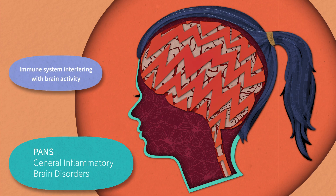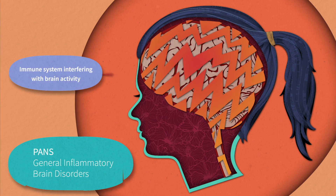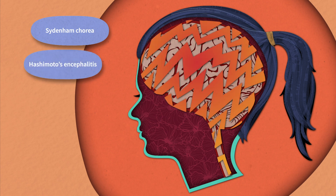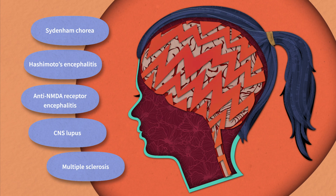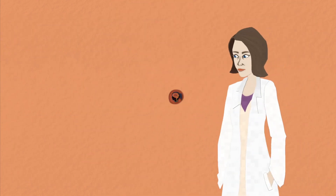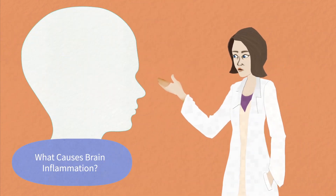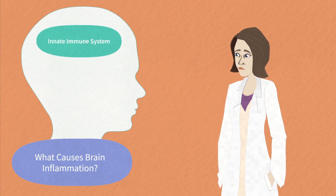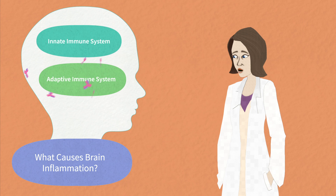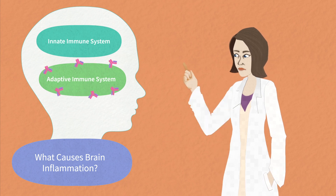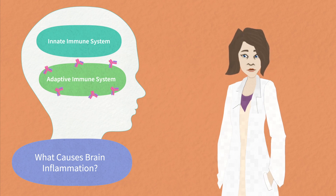Inflammatory brain disorders occur when a misguided immune response affects the brain. Sydenham chorea, Hashimoto's encephalitis, anti-NMDA receptor encephalitis, CNS lupus, and pediatric multiple sclerosis are examples of brain disorders thought to be caused by immune dysregulation. Each of these presents with its own course and characteristic neurological and psychiatric symptoms. Some brain inflammation is thought to be mediated by the innate immune system involving non-specific inflammatory processes, while others are thought to involve the adaptive immune system involving antibodies that recognize epitopes in the CNS. Some inflammatory brain disorders may very well involve both systems.